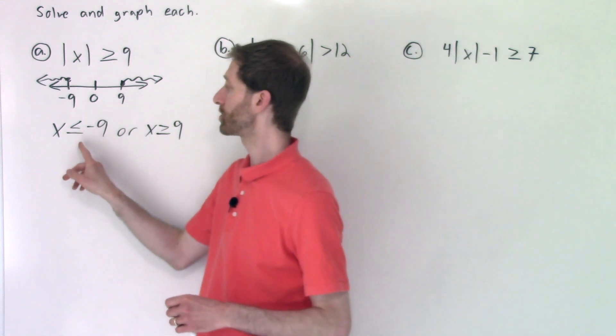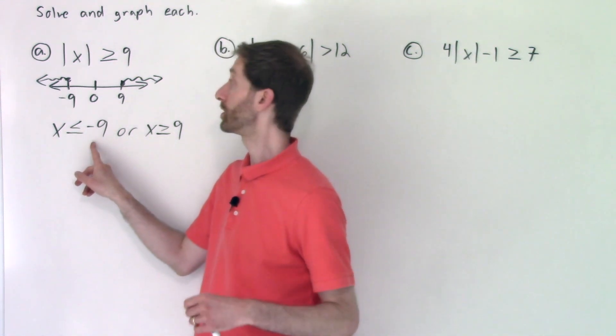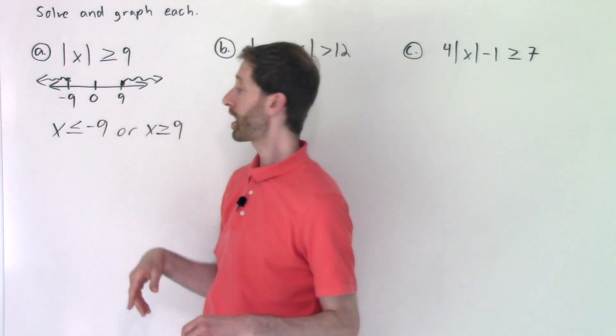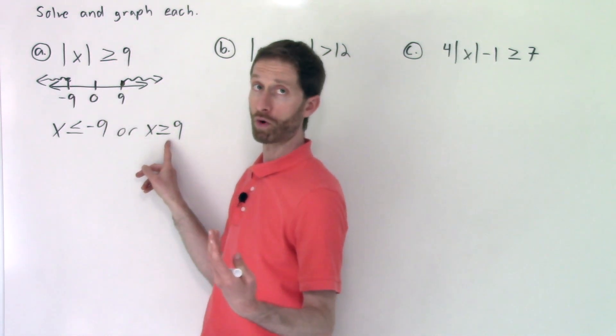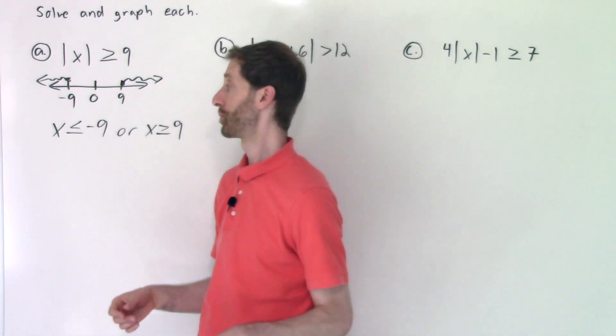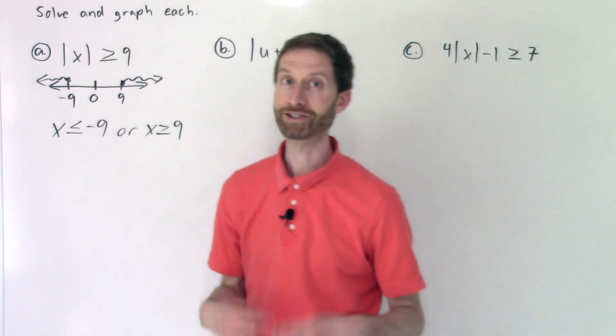I mean, check your answer. Let's pick a number less than or equal to negative nine, negative 11. The absolute value of negative 11 is 11, and that's more than or equal to nine. 15 would be a number more than nine. 15, the absolute value of which is 15, which is more than nine. Sweet. Let's keep going with this idea.